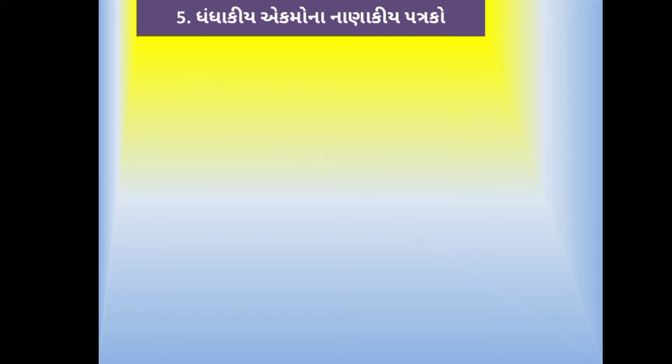નામું એ એક સળંગ પ્રક્રિયા છે અને આ નામાના વિષયમાં તમે જે અભ્યાસ કરો છો તે તમામ પ્રકરણ નામાની એક સળંગ પ્રક્રિયાના નાના નાના ટુકડા કરેલ ભાગ છે. ધંધો એ નફ્ફાના હેતુથી કરવામાં આવતી આર્થિક પ્રવૃત્તિ છે. ધંધાકીય એકમમાં પાયાનો ચોપડો આમ-નોંધ ગણવામાં આવે છે.